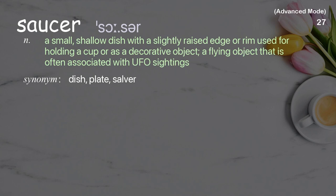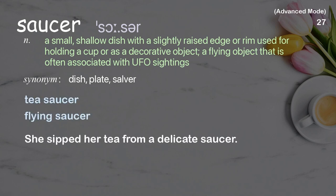Saucer: a small, shallow dish with a slightly raised edge or rim used for holding a cup or as a decorative object; also a flying object often associated with UFO sightings. Examples: tea saucer, flying saucer. She sipped her tea from a delicate saucer.